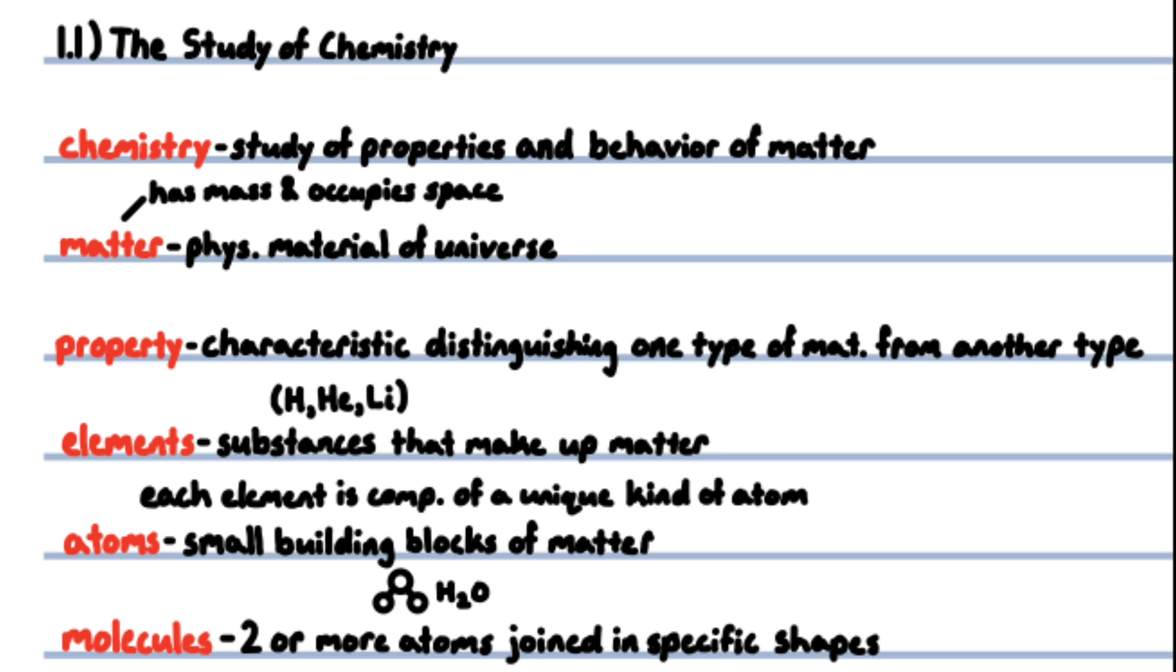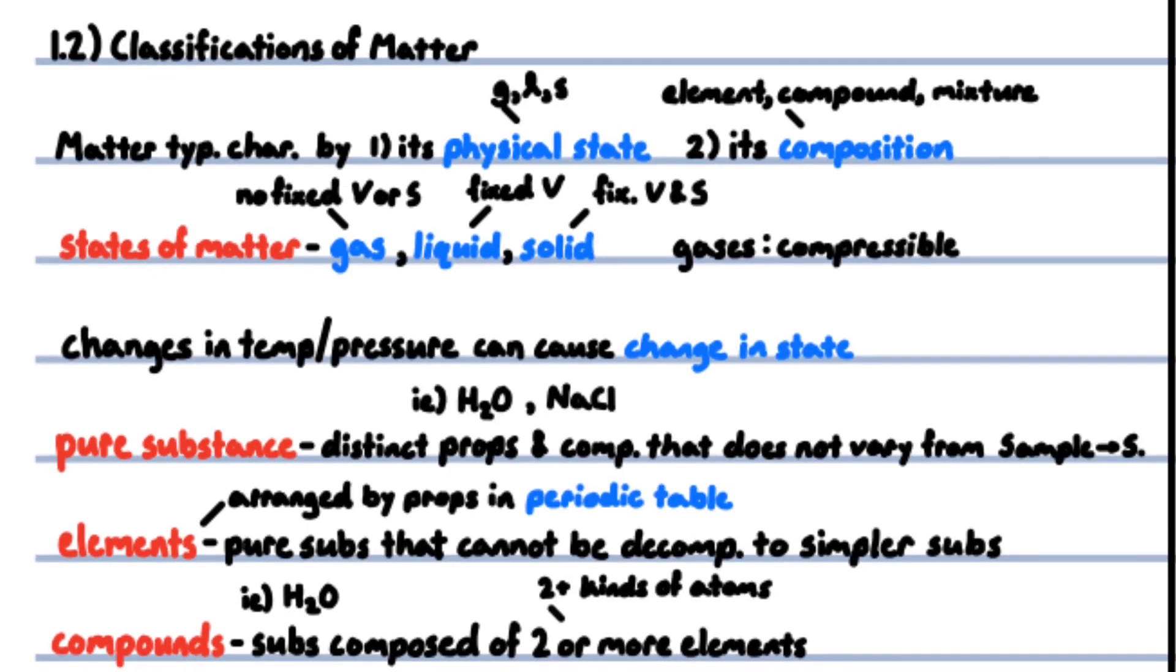Elements include hydrogen, helium, and lithium. Atoms are almost infinitesimally small building blocks of matter. Each element is composed of a unique kind of atom. A molecule is two or more atoms joined in specific shapes, for example, each water molecule or H2O molecule is composed of two hydrogen atoms attached to one oxygen atom.